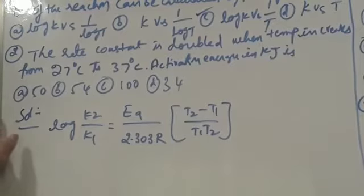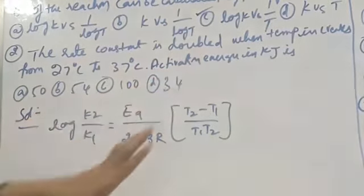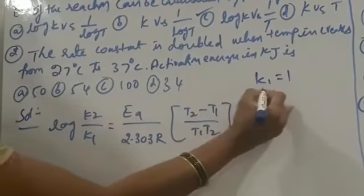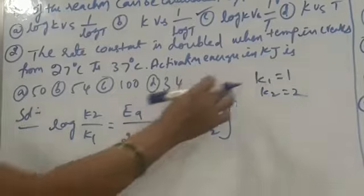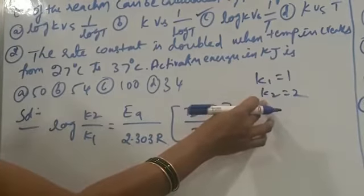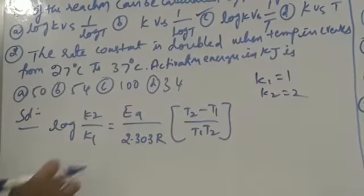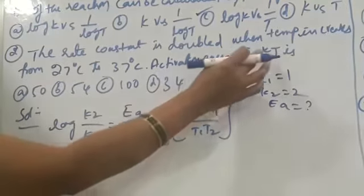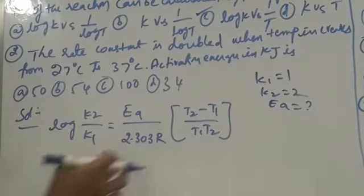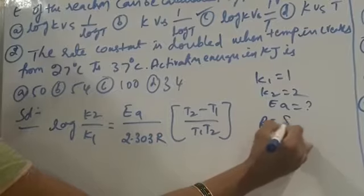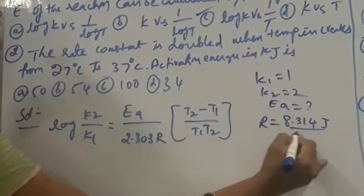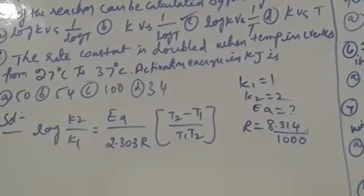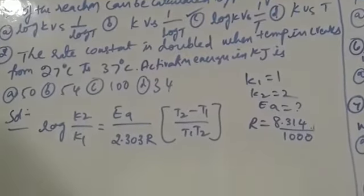Given data: rate constant is doubled, so K1 is 1 and K2 is 2. We need to calculate activation energy Ea in kilojoules, so R value is 8.314 joules divided by 1000 to convert into kilojoules.